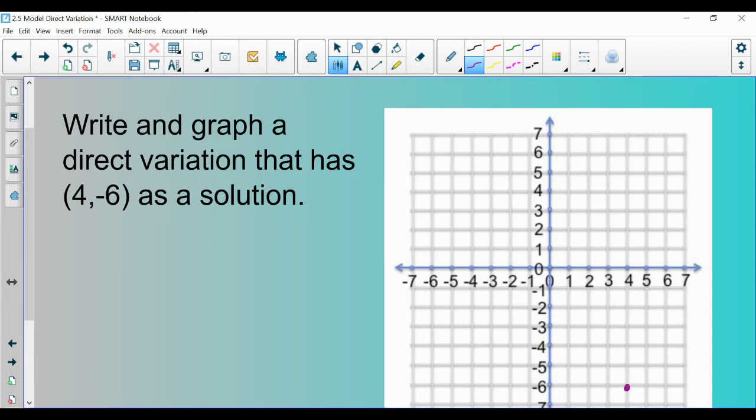By definition, remember that direct variation also has to go through the origin, or its y-intercept has to be at 0. So in order for me to graph it, I can just graph the point 4, negative 6, and 0, 0, and then connect them, and I've graphed it. So that's graphing them.